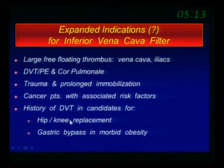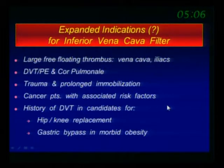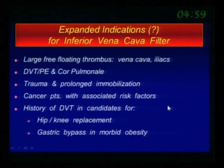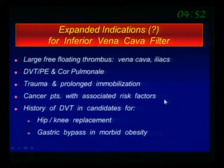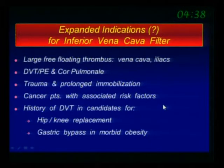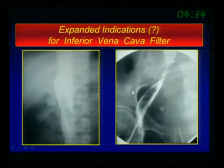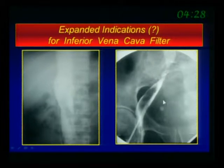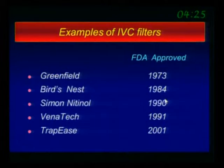For discussion: if you have a large free-floating thrombus in the vena cava or iliac, it's not an absolute indication. DVT with very limited pulmonary reserve is also not absolute. Trauma and prolonged immobilization, cancer patients with associated risk factors, history of DVT in candidates for hip or knee replacement, gastric bypass and morbid obesity — all those are now questionable indications. If you're going to place one, you have to document in the chart why you're doing it and discuss complications with the family. Ten years ago, free-floating clot in the vena cava — no discussion, just put the filter. Now we really have to pay attention.